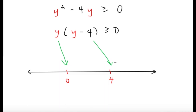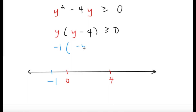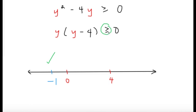We plot those two on the number line and use the testing of points. We test a value in each region. For region 1, let's try negative 1. Substituting: y becomes negative 1, y minus 4 becomes negative 5, and negative 1 times negative 5 equals 5, which is greater than or equal to 0. So this is correct — the region containing negative 1 is a solution. Since we have greater than or equal to, all values of y less than or equal to 0 are going to work.